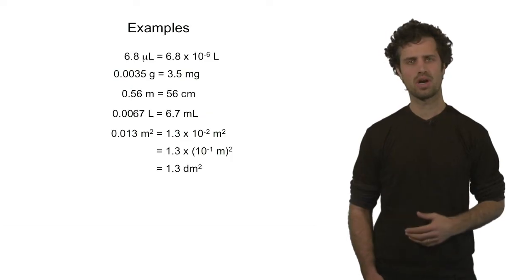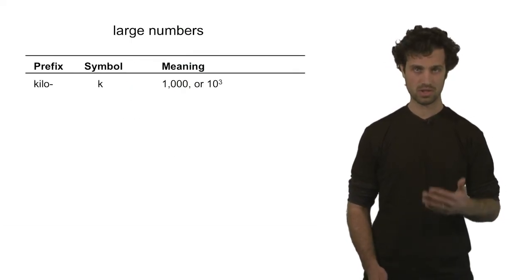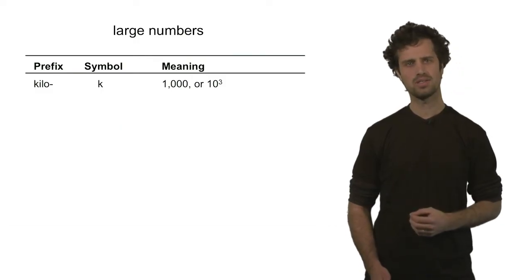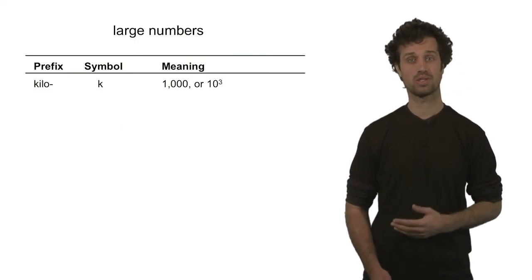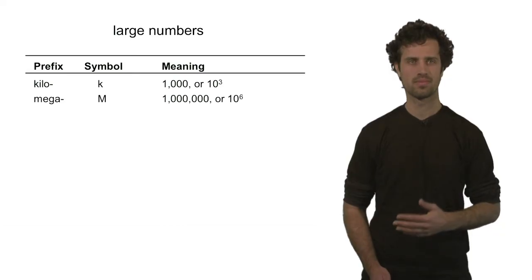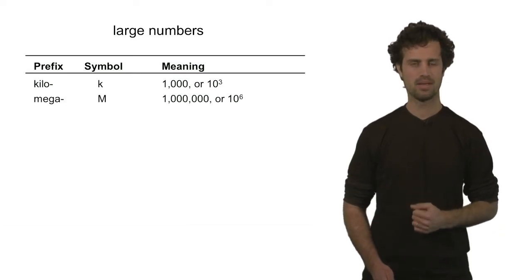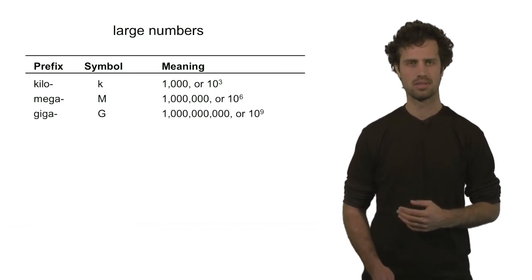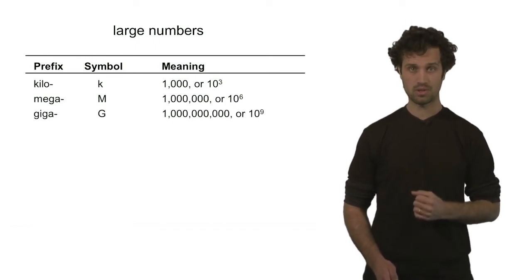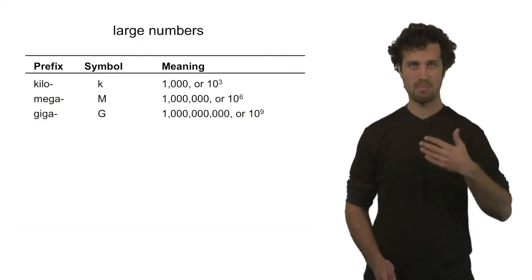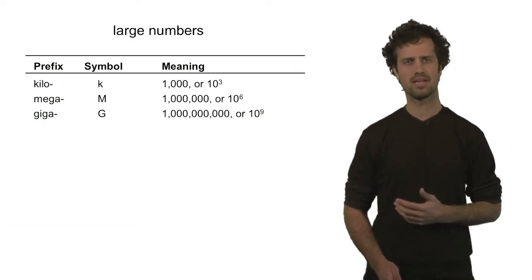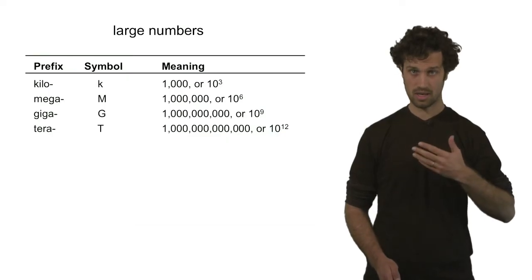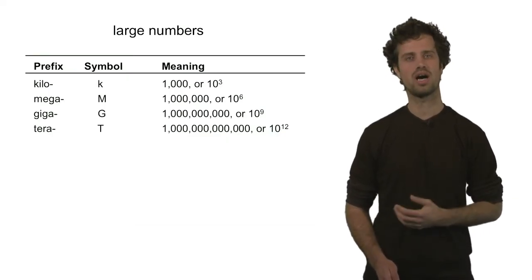Let's now focus on the prefixes of large numbers — numbers larger than one. Kilo, or k, means a thousand times, or ten to the third. Mega, or capital M, means a million times, or ten to the sixth. Giga, or capital G, means a billion times, or ten to the ninth. And finally, tera means ten to the twelfth, or a trillion times.